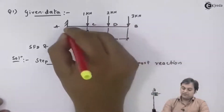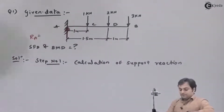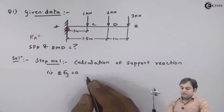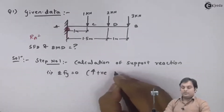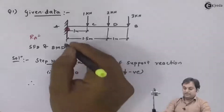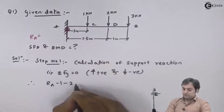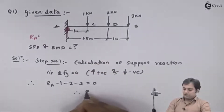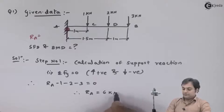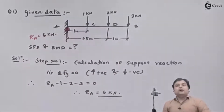There won't be a reaction at the free end. Here I have Ra, the value which I have to calculate. It can be calculated using summation of Fy equal to 0 — the sum of all vertical forces equals zero. Upward forces are positive and downward forces negative. So Ra (upward, positive) minus 1 minus 2 minus 3 equals 0, giving Ra equal to 6 kN.